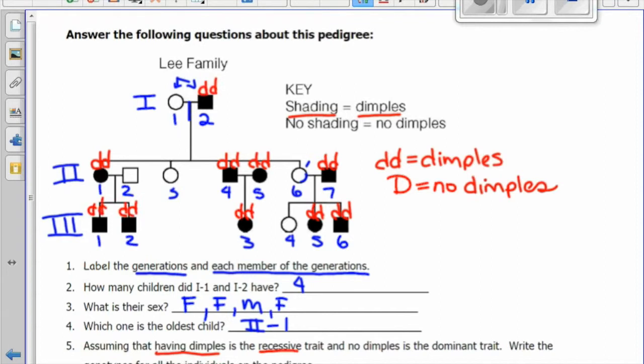Anyone who is not shaded in has no dimples, so they will have at least one capital D. And then we can look to their kids or to their parents to see what the other letter is. We see that 1-1 has a child with two little d's, so they must have given them one little d. So they are heterozygous.